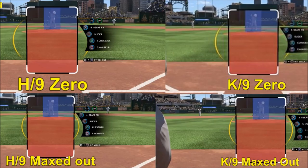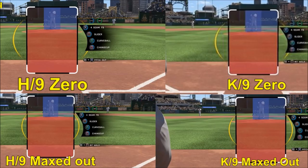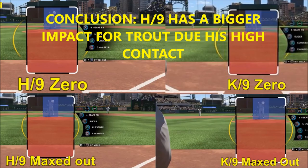Hits per nine maxed out compared to K per nine — when you max out Garrett Cole's hits per nine, the PCI is slightly smaller compared to maxing out his K per nine. It's very subtle but I just wanted to show how it works as a modifier. K per nine and hits per nine are still the two most important attributes for pitching, besides VLO and break, as far as the per nine ratings go. We're also going to be doing a walks per nine and eventually a home runs per nine video to break them down. This is Cardinalbird5 signing out — hope you guys learned a thing or two.